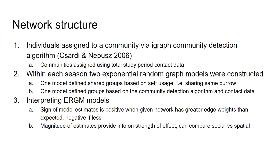Network structure was determined in three parts. First, individuals were assigned to a community via the iGraph community detection algorithm based on contact data for the total study period. Then within each season, two exponential random graph models were constructed: one defined on shared sett usage (sharing the same burrow), to see if badgers in close spatial proximity had disproportionately higher contacts than expected, and one based on the community groupings from the algorithm, to see which grouping better explains the contact data.